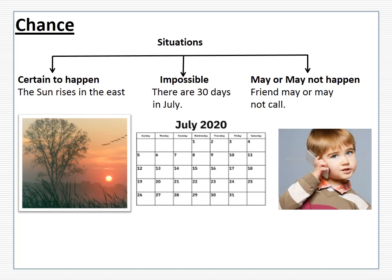In our daily life we use words such as impossible, certainly, very likely, 50-50 chance, etc., to describe the chance of happening of an event. Now there are 3 different situations. The first one is certain to happen — for example, the sun rises in the east, or it snows in Shimla in the month of January. That is something which is definitely going to happen.